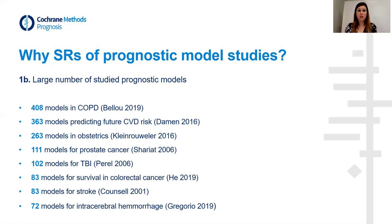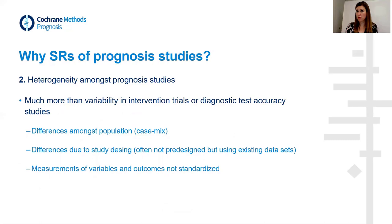Going through the list, you can see it's rather the rule than the exception that many different models are developed for the same outcome — for the same target condition or health state we want to predict. So you can ask whether that's essential to do, or whether we could avoid some of these studies and better focus on how to implement this type of information.